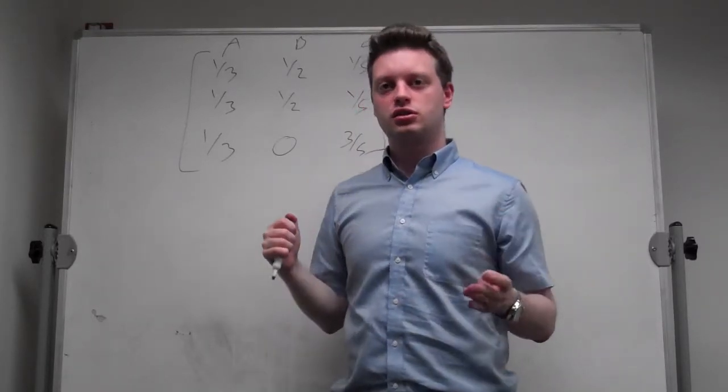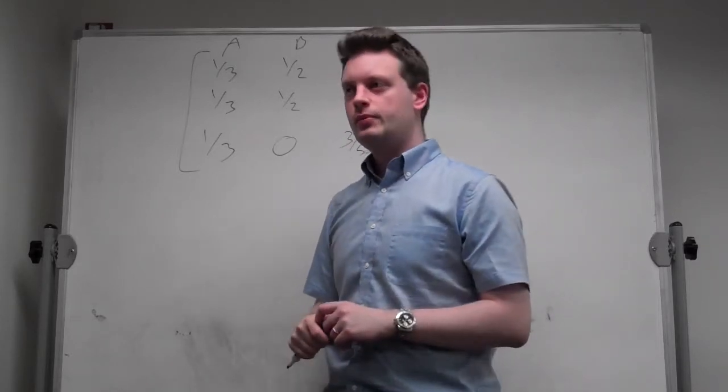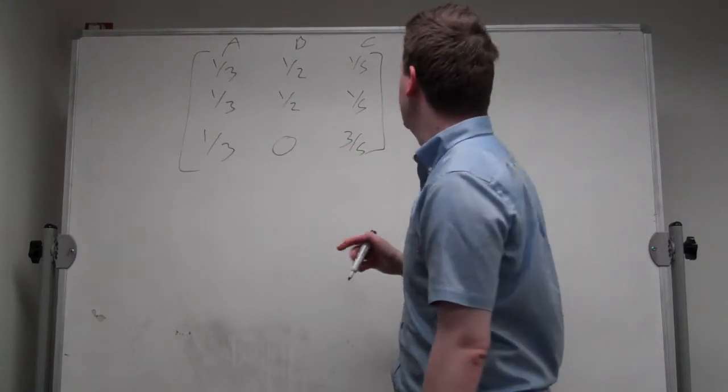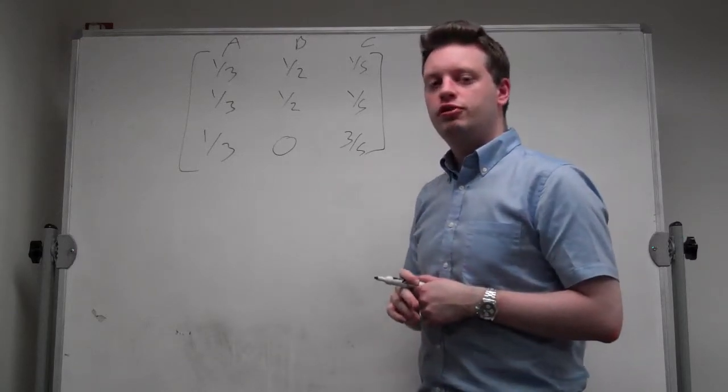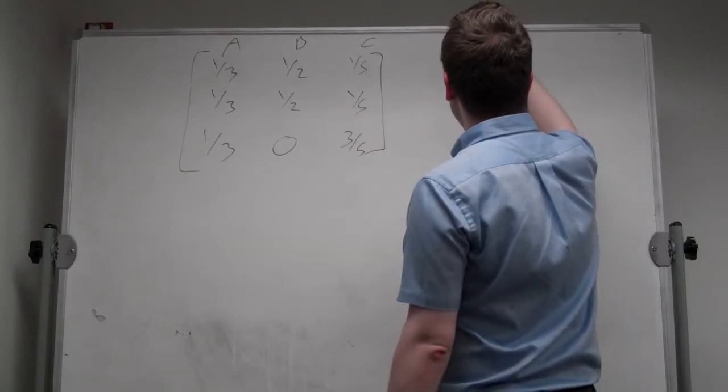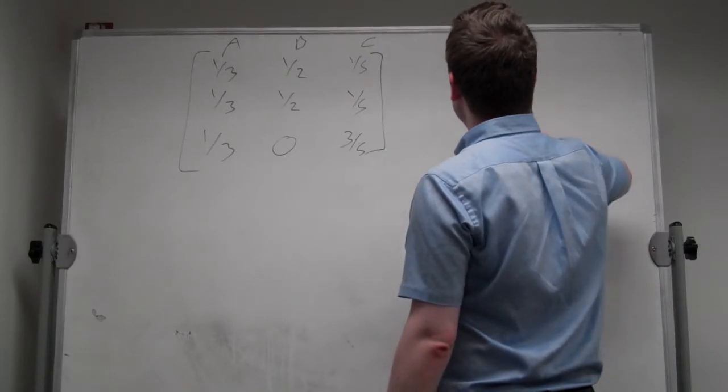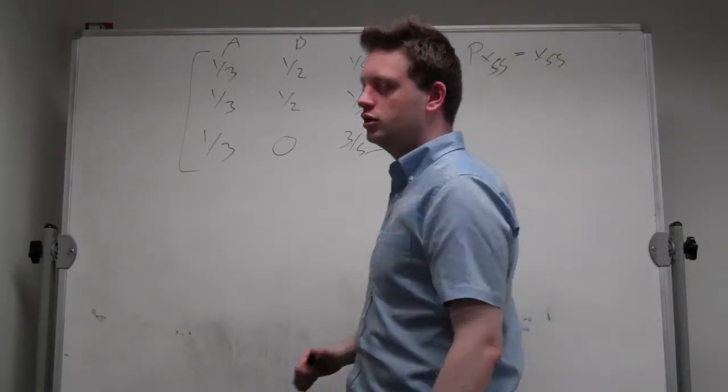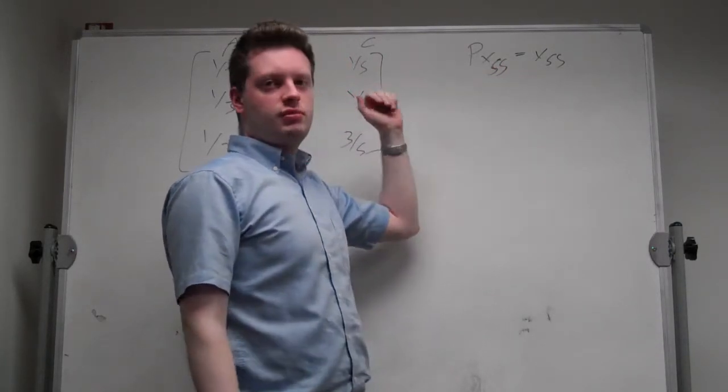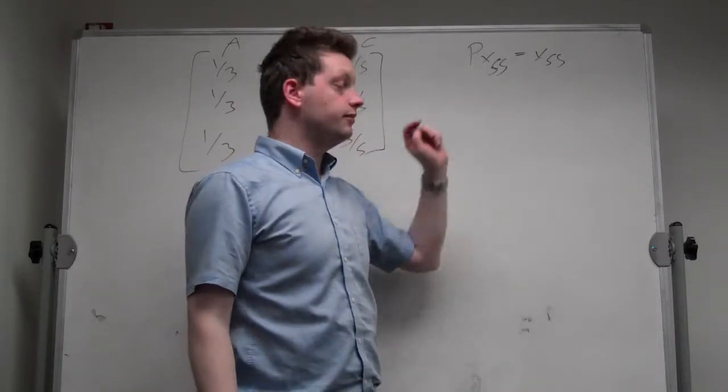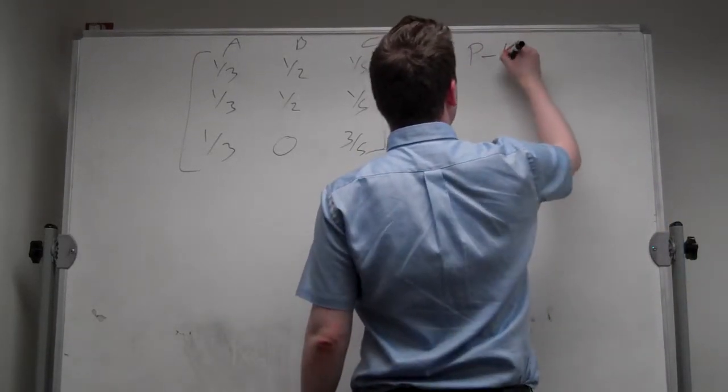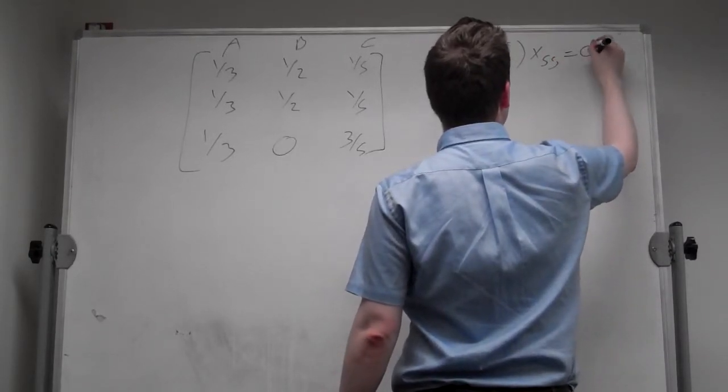This gives us the matrix of transition probabilities. This initial vector multiplying by this matrix to infinity will give us the steady-state. This allows us to find an alternative solution. In particular, if we call this matrix P, P times X steady-state should give us X steady-state. So if we multiply the steady-state vector times this matrix, we should get that steady-state vector again.